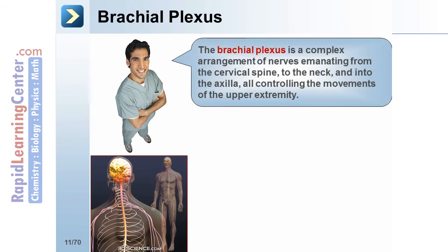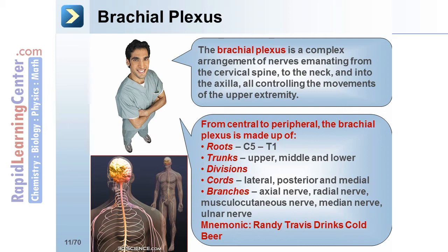The brachial plexus is a complex arrangement of nerves emanating from the cervical spine, to the neck, and into the axilla, all controlling movements of the upper extremity. From central to peripheral, the brachial plexus is made up of roots (C5 to T1), trunks (upper, middle, and lower), divisions, cords (lateral, posterior, and medial), and branches: axillary nerve, radial nerve, musculocutaneous nerve, median nerve, and ulnar nerve. You can remember this order with the mnemonic: Randy Travis drinks cold beer.